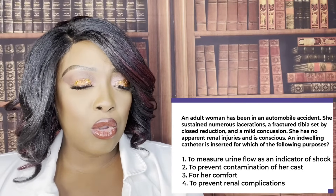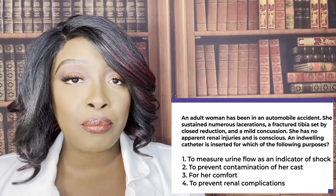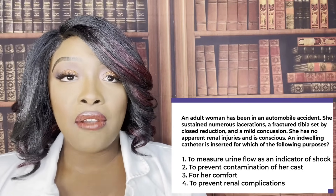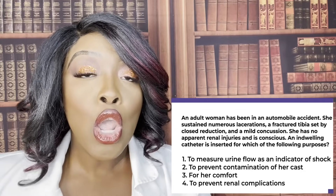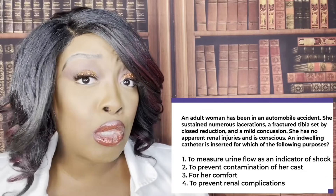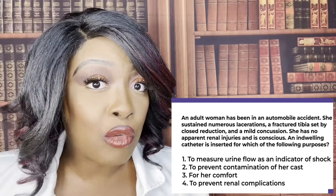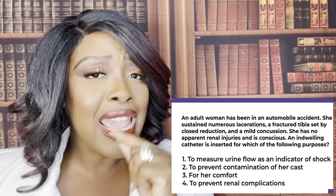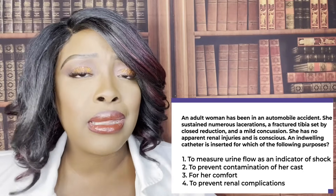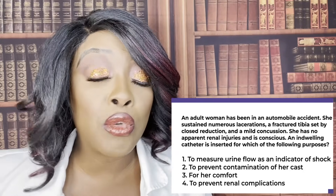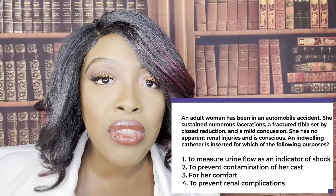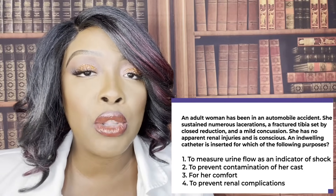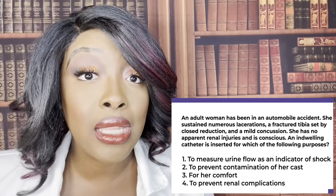When the body goes through shock, one of the first signs we'll notice is urine output going down, because the kidneys start to shut down. Patients should have at minimum 30 mLs per hour for urine output. Also keep in mind that about 25% of cardiac output goes to the kidneys, so it only makes sense that when a patient is in shock, the kidneys are among the first organs to start shutting down. That's why we insert the catheter.